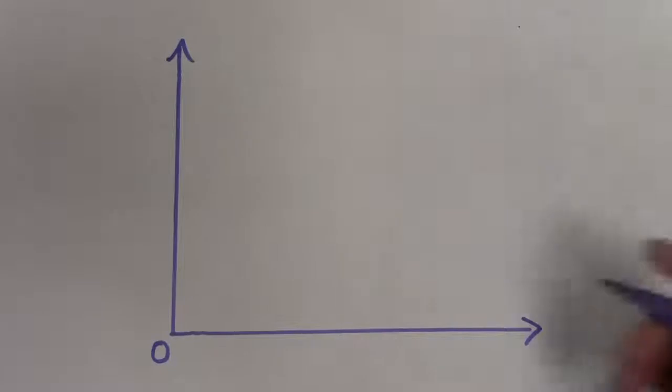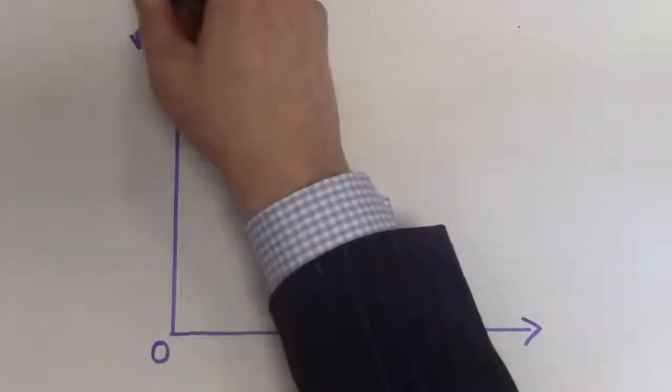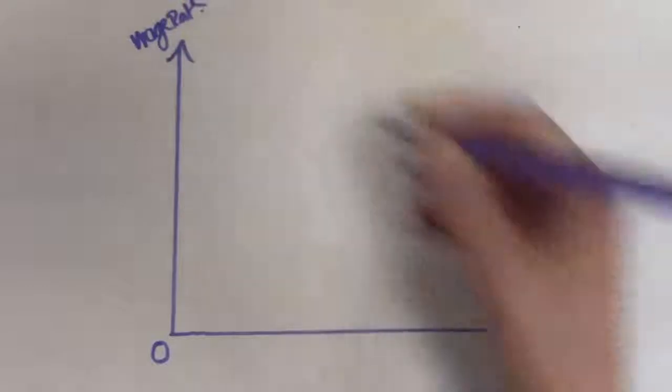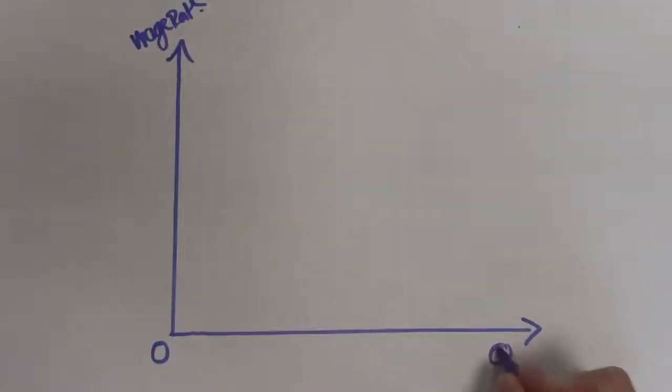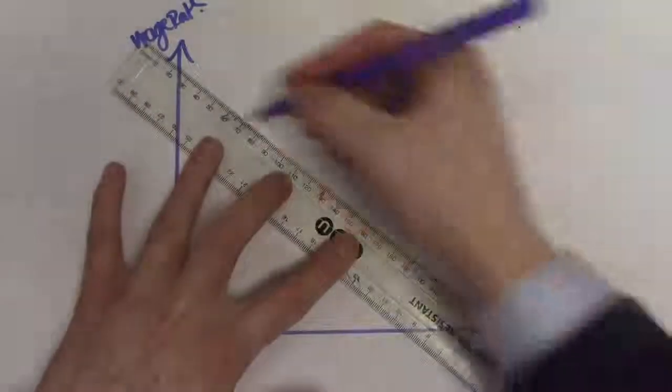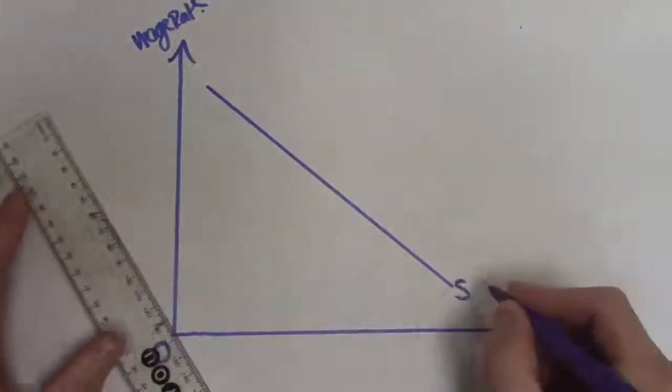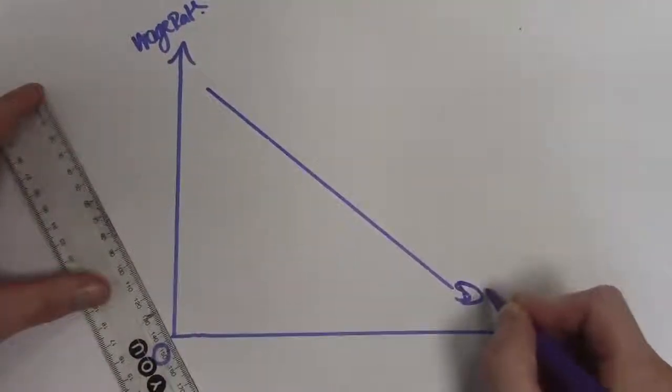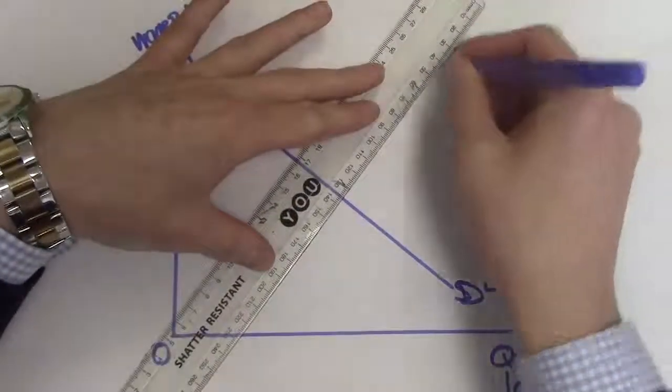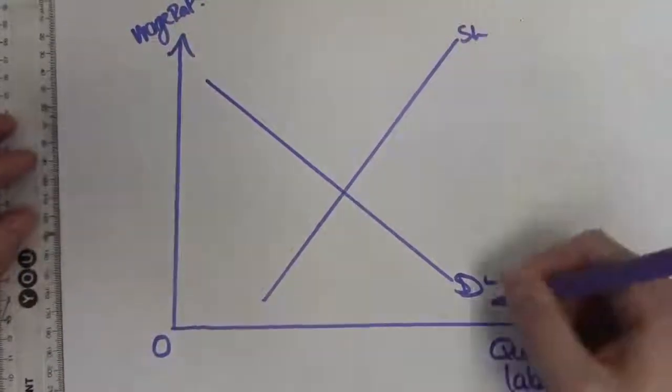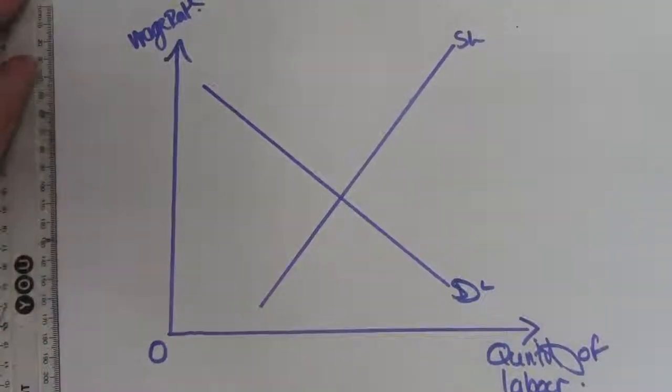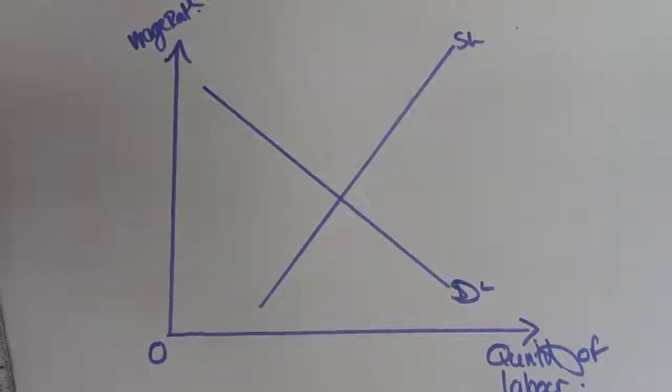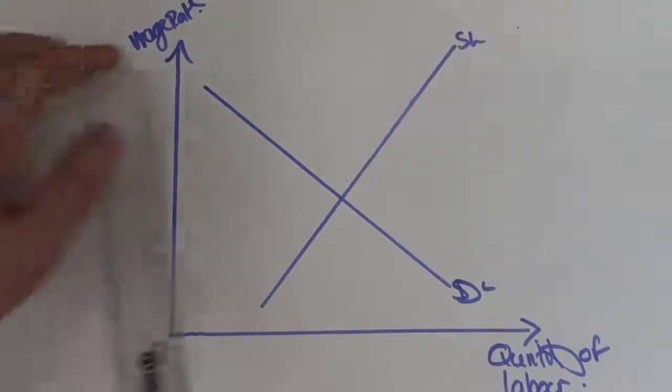So on our y-axis we have our wage rates and on our x-axis we have the quantity of labor, with zero in the corner. Not a difficult one - we're looking at the supply and demand, demand for labor and our supply of labor in a market. It's just a basic supply and demand diagram, very similar to our work at AS.